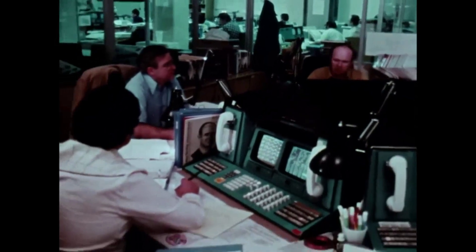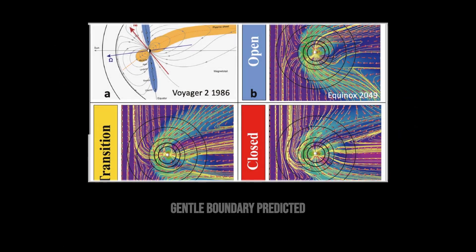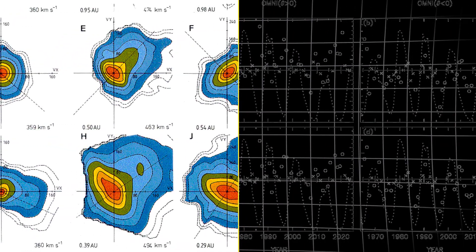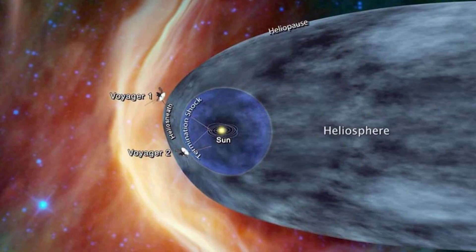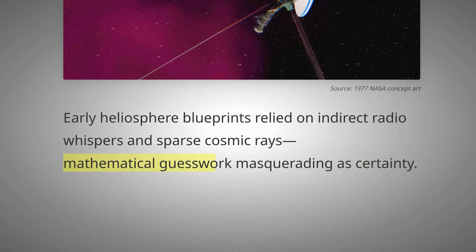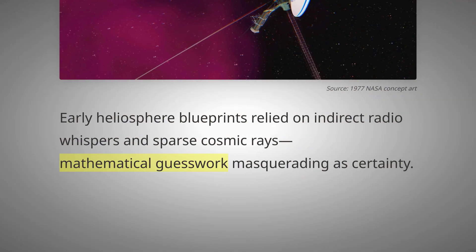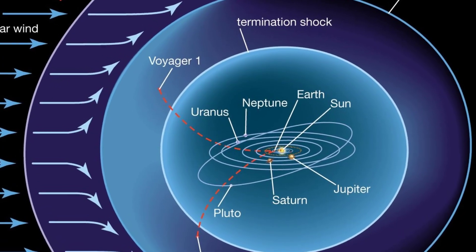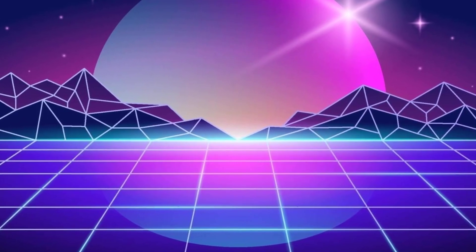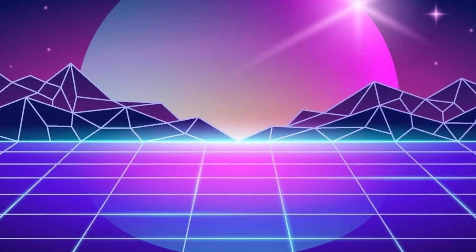Most predicted a gentle transition. The solar wind would slow, cool, and thin, merging seamlessly with interstellar space. The prevailing maps showed a comet-shaped heliosphere, trailing a long tail behind the Sun. Yet these models rested on guesswork, built from indirect measurements and assumptions about distant plasma. No probe had ever crossed the true threshold. The result was a knowledge gap, an entire frontier defined more by imagination than by evidence.